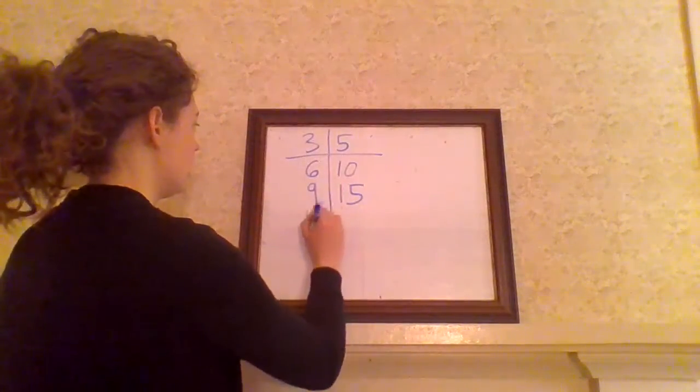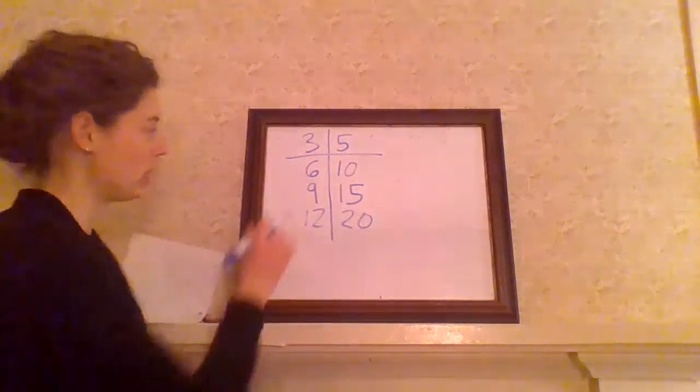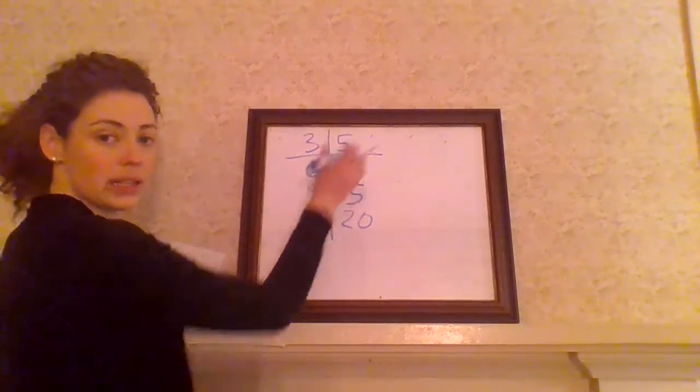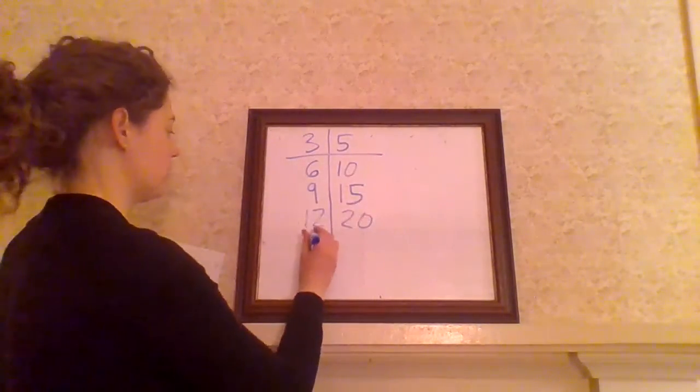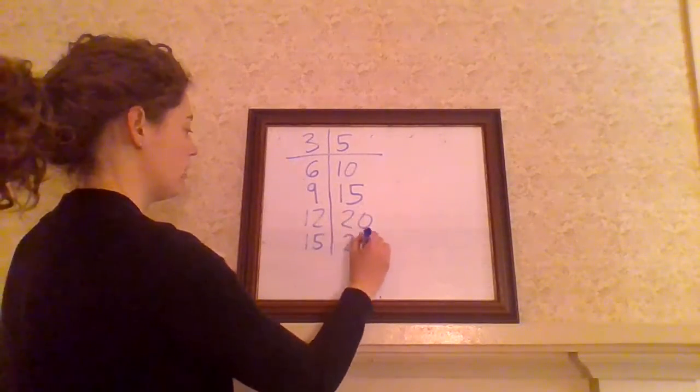Okay, three, six, nine, 12, five, 10, 15, 20. See how we can skip count? Over here, we're skip counting by threes. And over here, we're skip counting by fives. 12, 15, and 25. Okay, let's try another one.